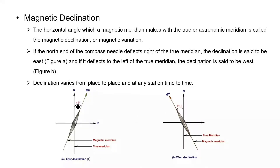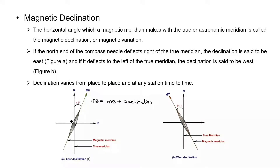So it is called east declination. In Figure B, the magnetic bearing makes angle delta with respect to the true meridian towards the leftward direction, and it is called west declination. Based on this angle and figure, we may write: True Bearing = Magnetic Bearing ± Declination. This plus-minus is based on the type of declination — if east, use plus; if west, use minus.